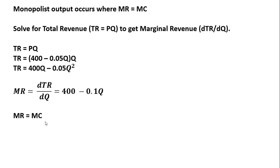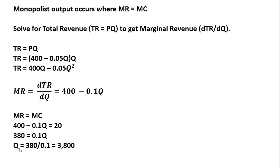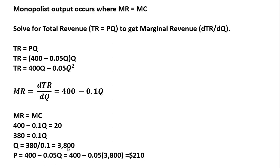Next we'll set marginal revenue equal to marginal cost in order to maximize profit. Setting our marginal revenue equation equal to marginal cost of $20: solving for Q, I subtract 20 from both sides, so 0.1Q equals 380, then dividing through by 0.1. The profit-maximizing output level for this monopolist is 3,800 units. If we wanted the price, we take this value for Q and plug it into the inverse demand — the monopolist will charge a price of $210 per unit.